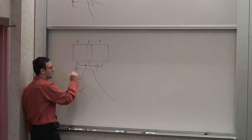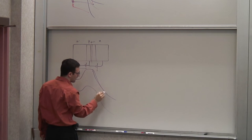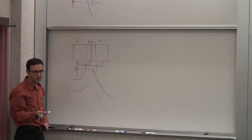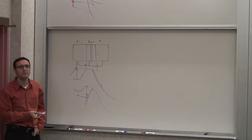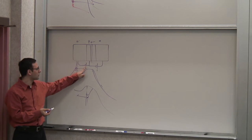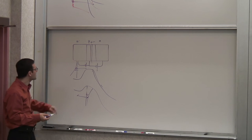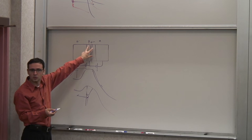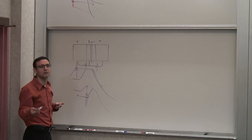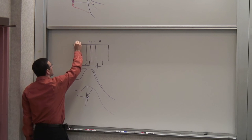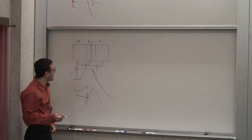When you reverse bias the collector-base junction, you create a large electric field that will absorb these electrons once they get to the collector side. But there was a problem: an equal number of holes could be injected back into the emitter if you don't have a structure to collect them. So we want to minimize the holes injected back, because otherwise you'd need to provide a large base current to make up for those lost holes. One way was to make the emitter doping level much higher than the base doping.